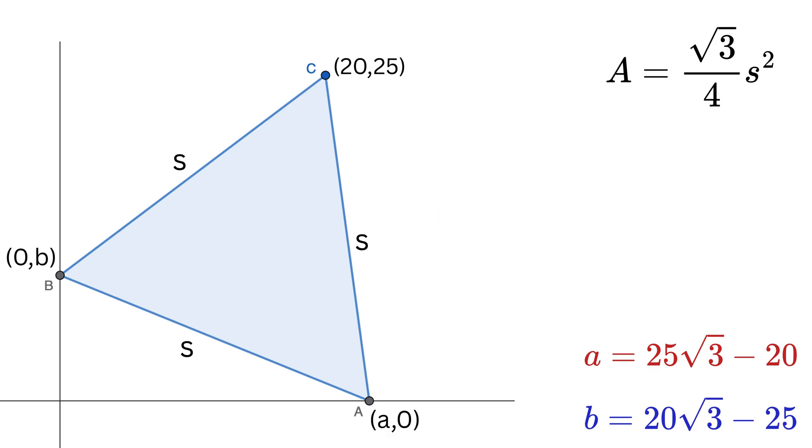It's easy. We can use the distance formula for these two sides to get the side length s² as this, which is equal to a² + b².